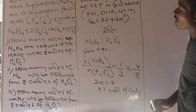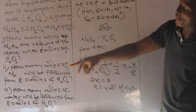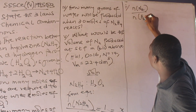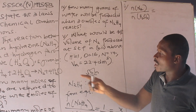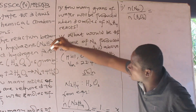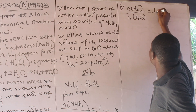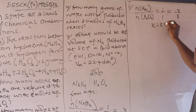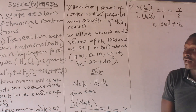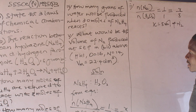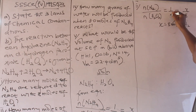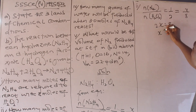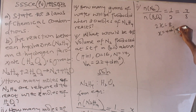How many moles of N2 are produced from 8 moles of peroxide? We compare the mole ratio of N2 to peroxide. From the equation, the mole ratio of N2 to peroxide is 1 to 1. From the information given, peroxide is 8 and N2 is X. So X = 8... but wait, the coefficient gives us a ratio of 1 to 2, so 2X = 8, and X = 4 moles of nitrogen gas.